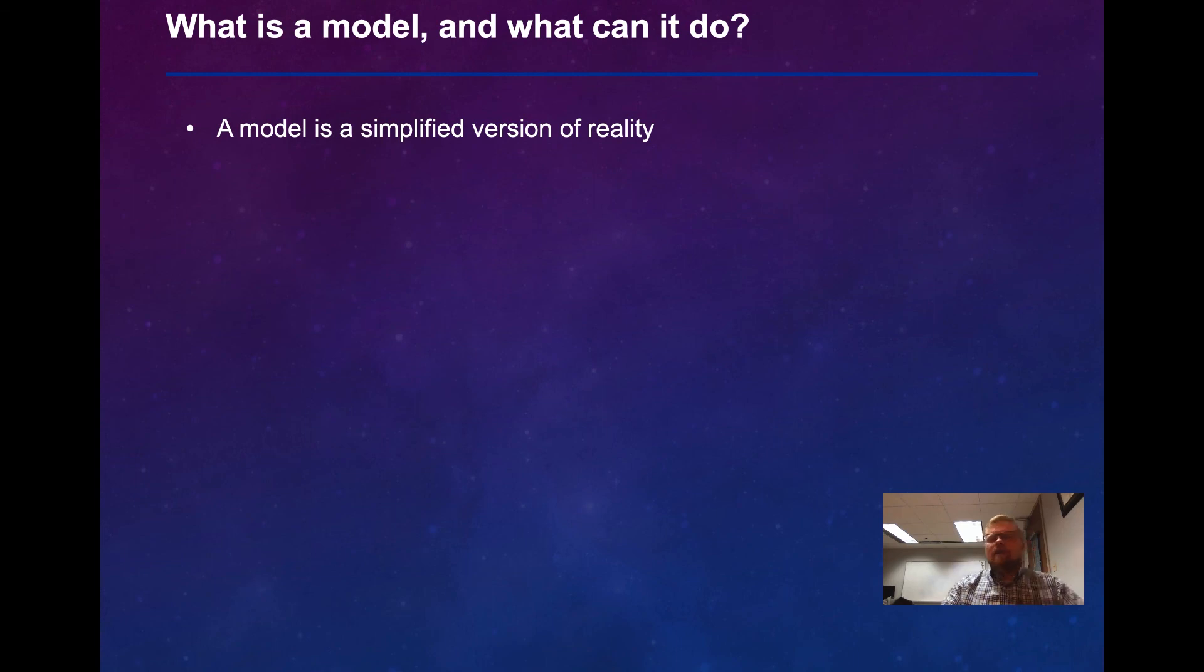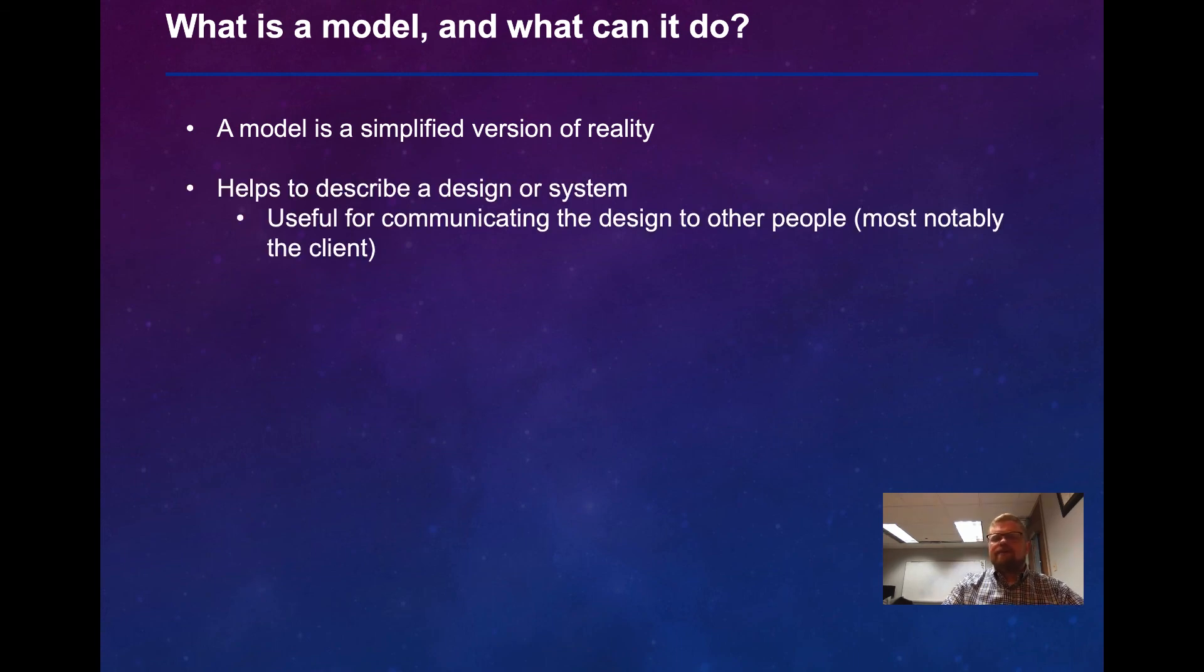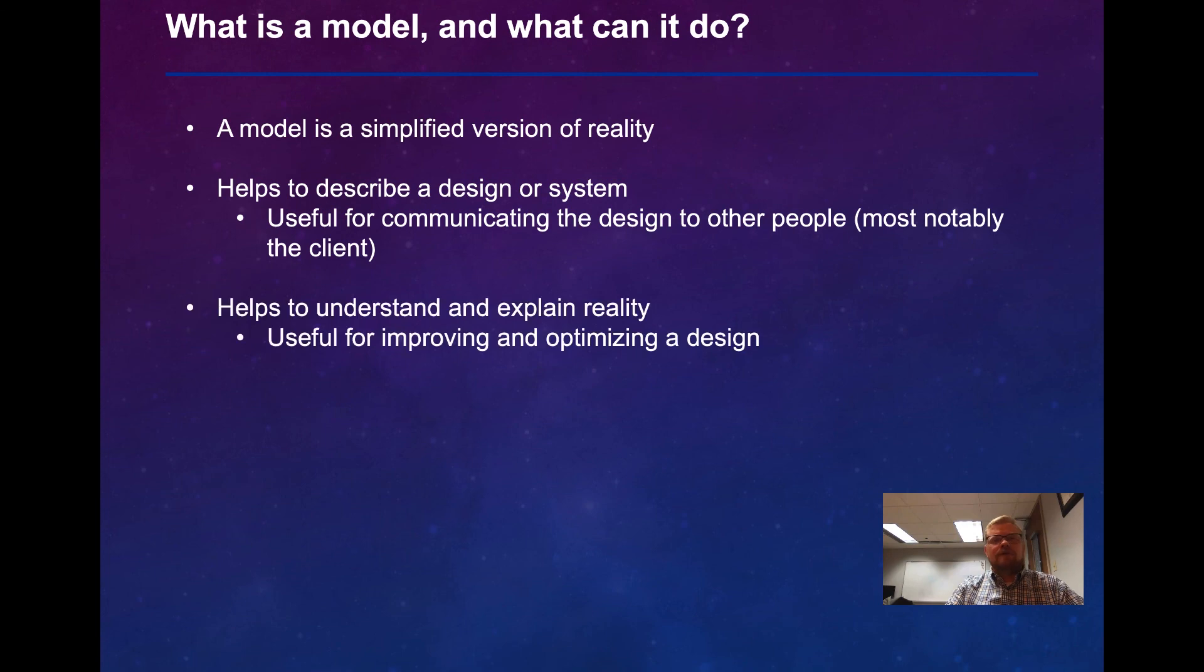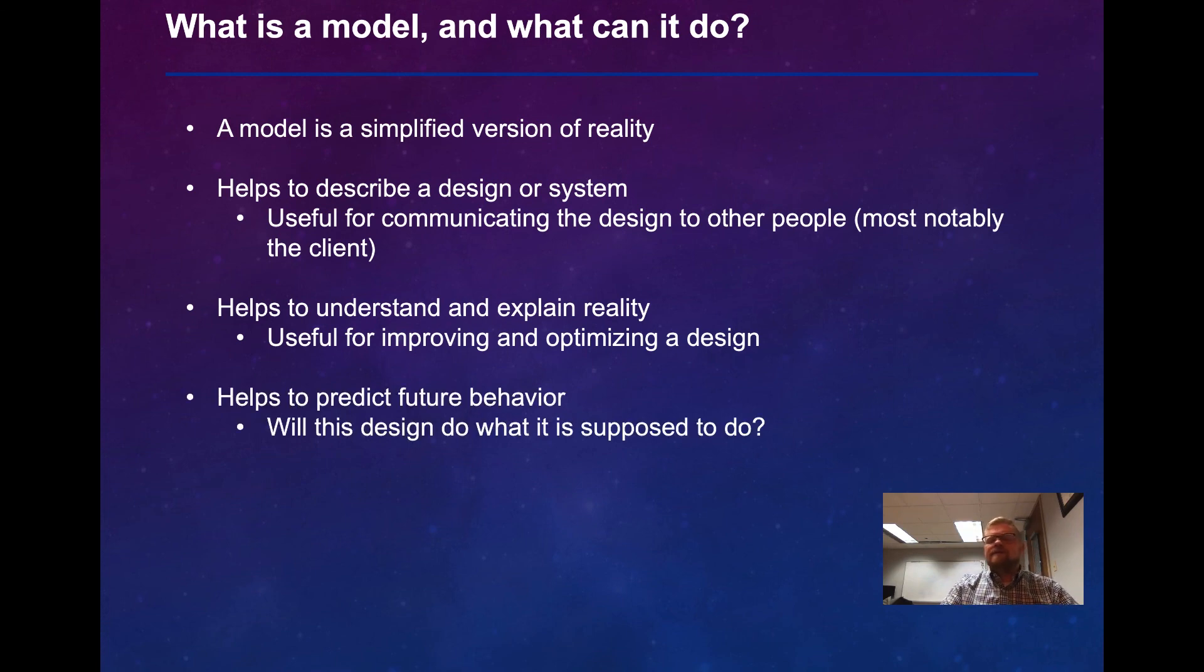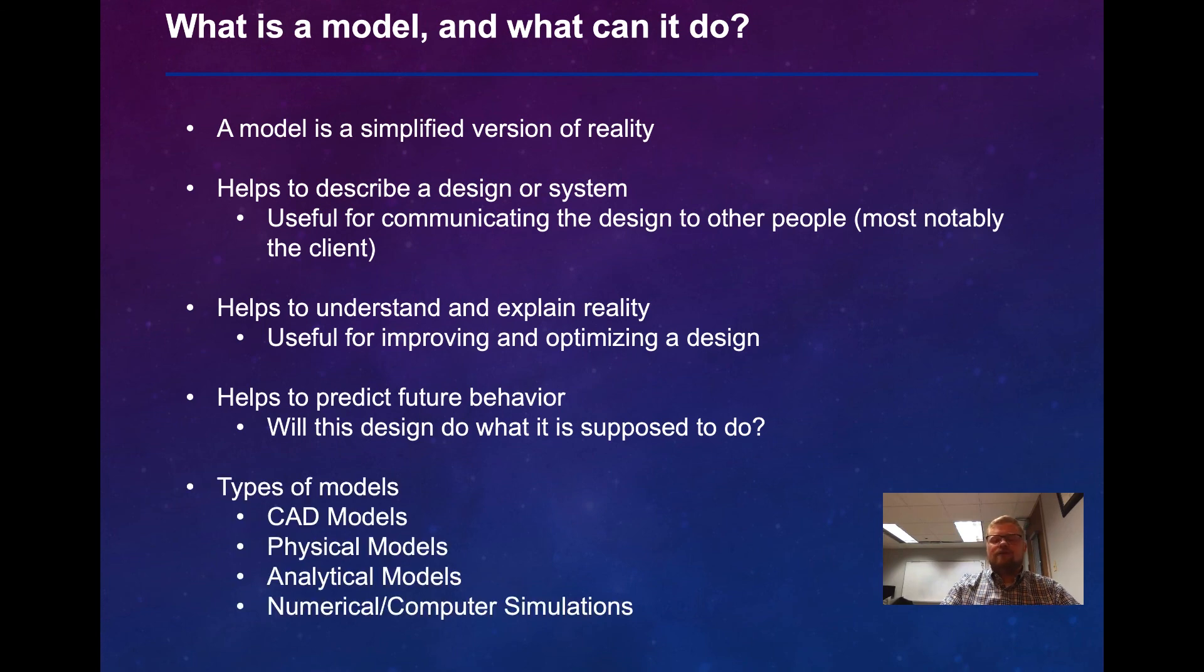Let's talk a little bit about a model. A model is just a simplified version of reality. It helps us describe a design or system. And it's useful for communicating that design to other people, most notably the client. It helps us to understand and explain reality. It's useful for improving and optimizing a design. It also helps us predict future behavior. Will this design do what we expect it to do?